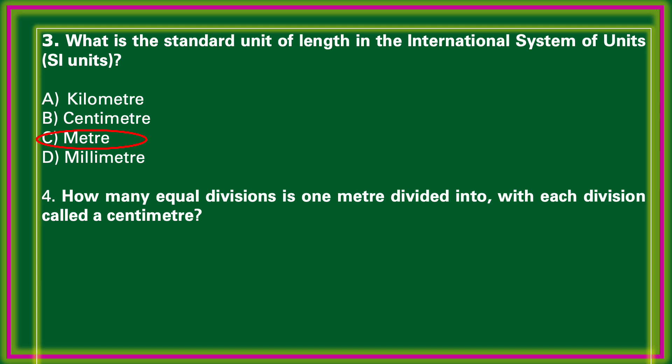How many equal divisions is 1 meter divided into, with each division called a centimeter? That is, 1 meter is equal to how many centimeters? Options: 10, 100, 1000, 10000. The correct answer: 1 meter is equal to 100 centimeters.